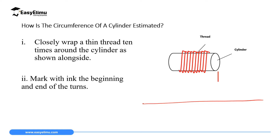At the beginning of the thread you make a mark, and at the end of the 10th wrap you also make a mark. When you remove the thread it will have two marks at the two ends, and the distance between those marks represents 10 wraps around the cylinder.